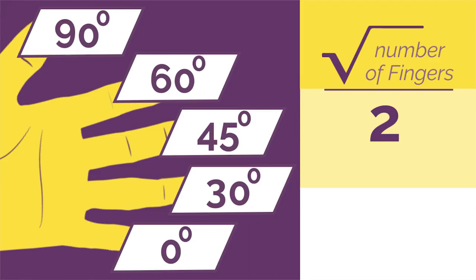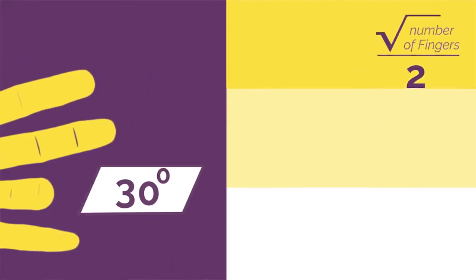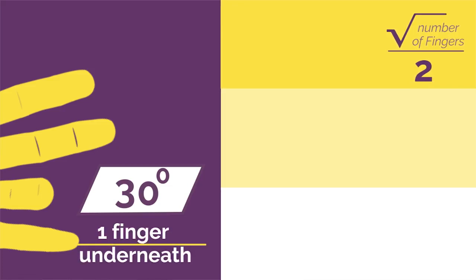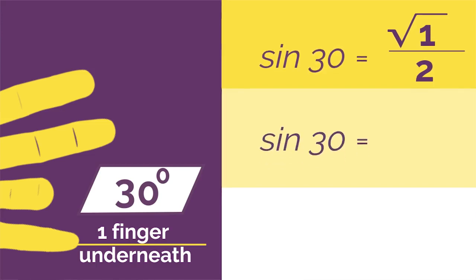So if we wanted sine 30, we'd bend down our 30 degree finger and you just have your baby finger underneath. So sine 30 is square root of 1 divided by 2 because there's only one finger underneath. Which simplifies to a half.